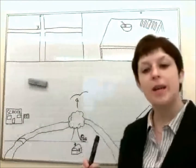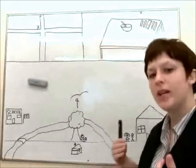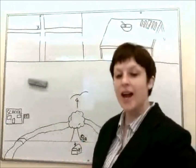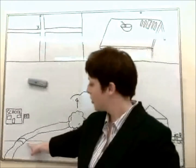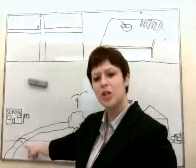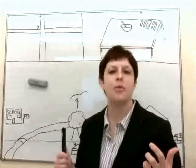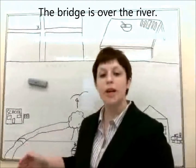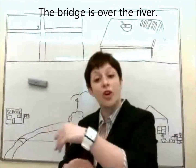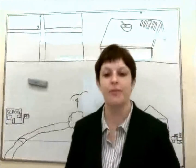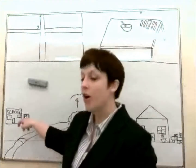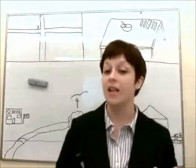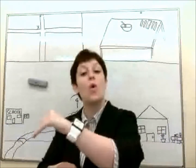So if we keep traveling on our journey, we come to a river. And here, if we look closely, is a bridge. So where is the bridge in relation to the river? The bridge is over the river. You have to walk over the bridge, so we say in English that the bridge is over the river.